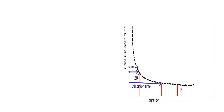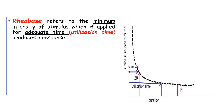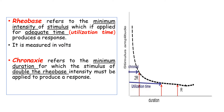Two important terms regarding the strength-duration curve are rheobase and chronaxy. Rheobase, abbreviated as R, refers to the minimum intensity of stimulus which, if applied for the adequate time — that is the utilization time — produces a response. Since it is a voltage or a stimulus, it is measured in volts.